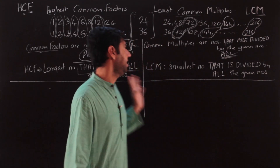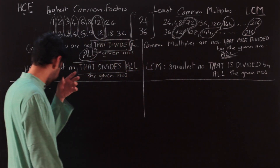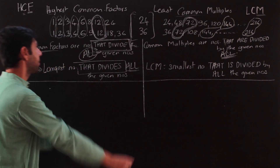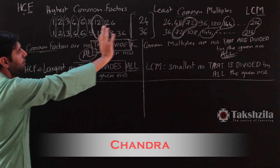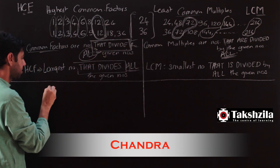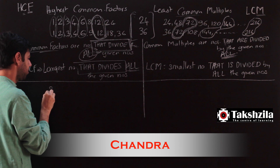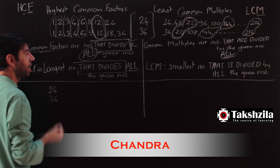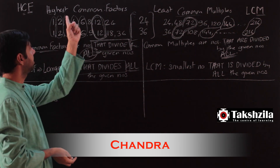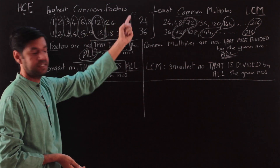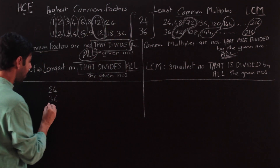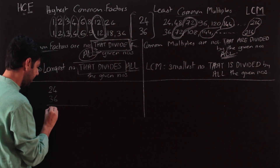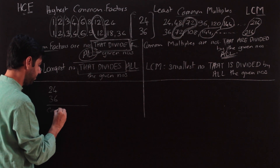We are still at understanding LCM and HCF but in a more textbook manner. Let's continue with the example: the numbers 24 and 36. We are interested in the common factors — factors are numbers that will divide them, so I'm writing them in the denominator.